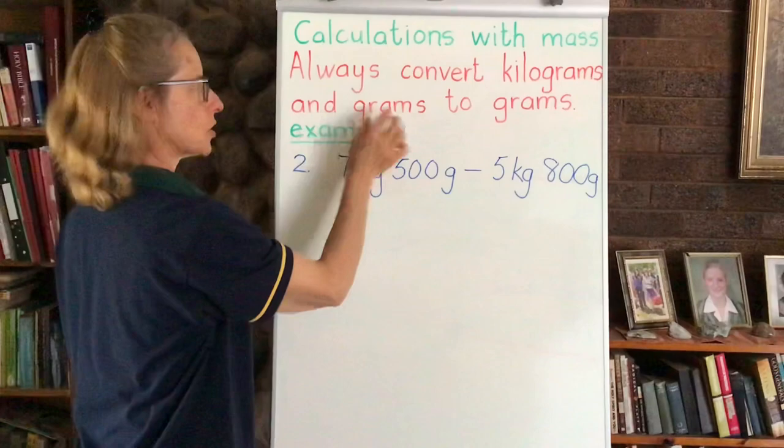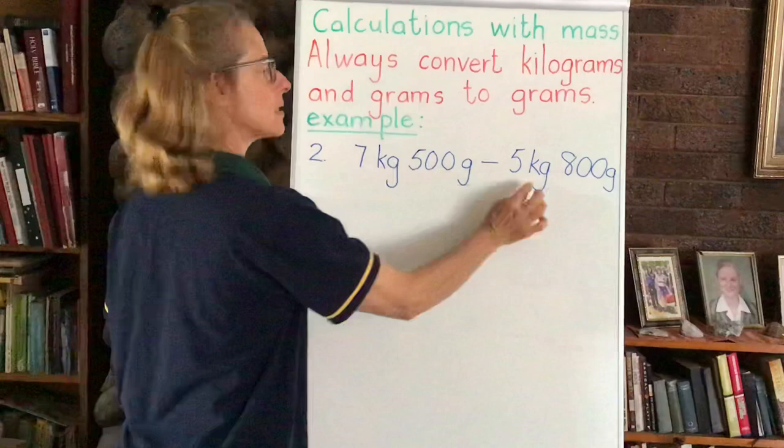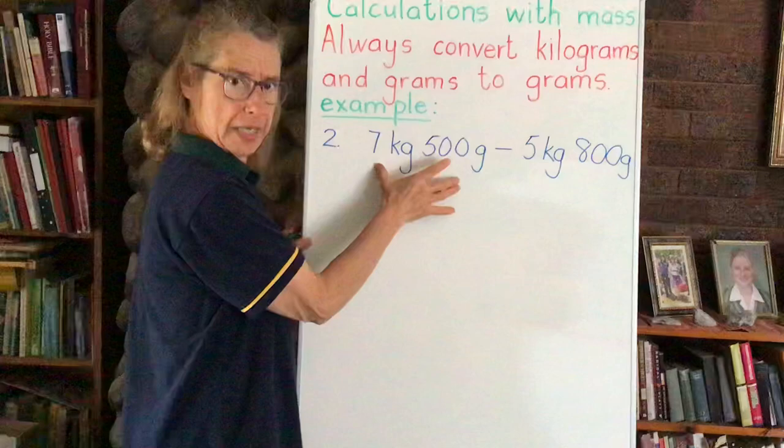So here we've got 7 kilograms 500 grams minus 5 kilograms 800 grams. Now we need to convert each of these pieces - this part of the sum and that into grams, and this part into grams. So let us begin now.